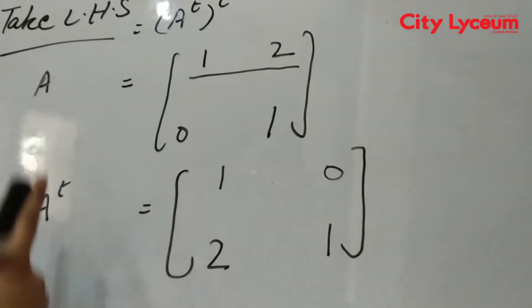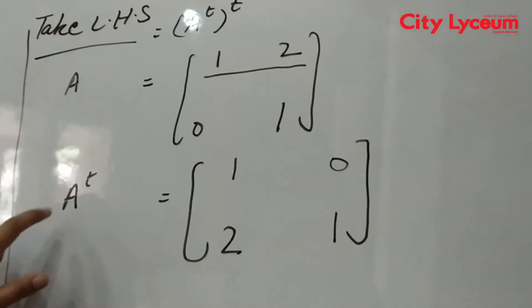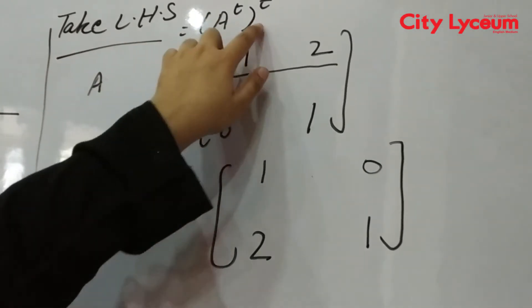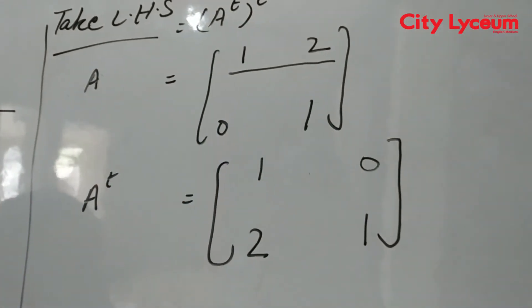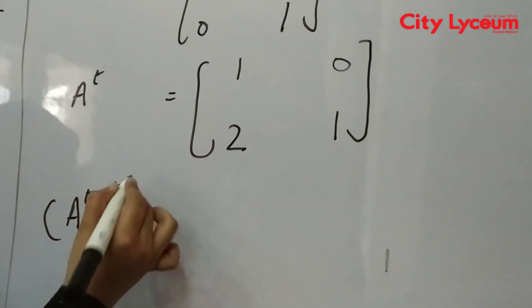And here we have A transpose. Now for the left hand side, which is A transpose bracket transpose, we will write (A^t)^t.